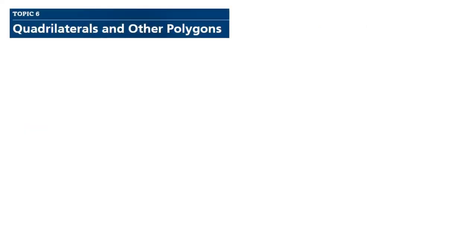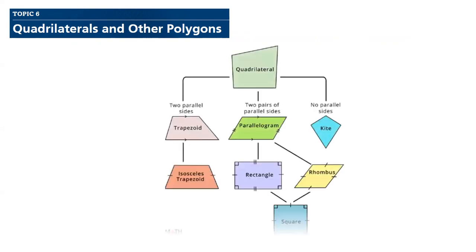Topic six is about quadrilaterals and other polygons in general. So we know that there is polygon and there is circle. Polygon is a sided figure. We will discuss the quadrilateral family in details and more.